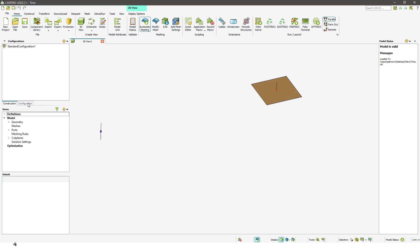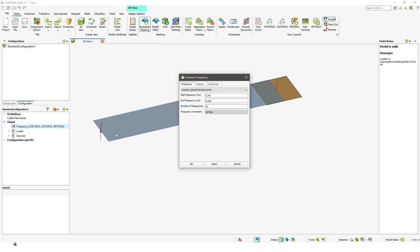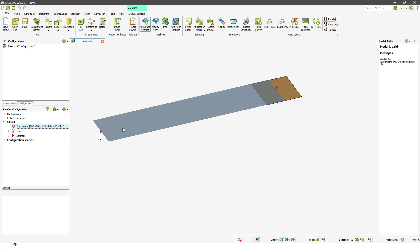In this simulation, the simulation frequency is between 200 MHz and 400 MHz. Actually, two antennas are resonating at 300 MHz.